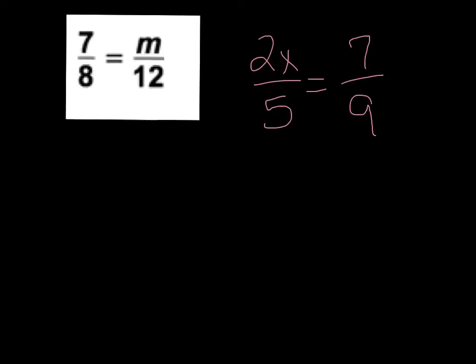All right, next one, again, cross products. We're going to take 7 times 12 and get 84, and then we're going to take 8 times m and get 8m.